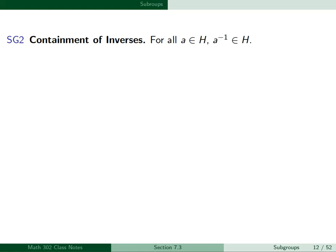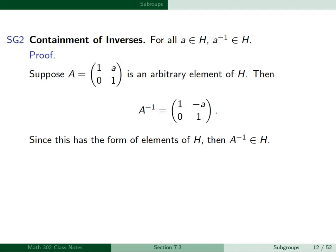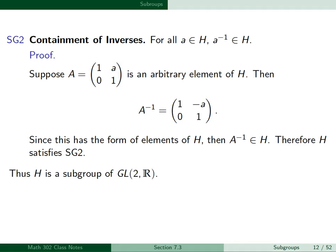For SG2, containment of inverses, we show for all A in H, A-inverse belongs to H. If A = [1, a; 0, 1] is an arbitrary element of H, then A-inverse is [1, -a; 0, 1]. This has the form of elements of H, so A-inverse belongs to H, and H satisfies SG2. Thus H is a subgroup of the group GL2R.